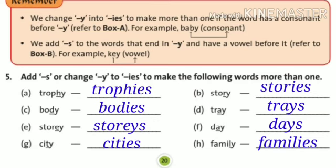Then, see, body - bodies. Tray. As you can see, here, before Y, there is a vowel. So, we just put S to make it plural. So, trays. Story. And this story, S-T-O-R-E-Y. And this means building. And here, E is your vowel. So, we just put S.